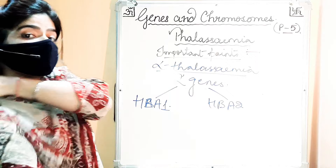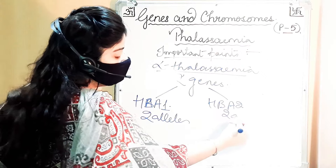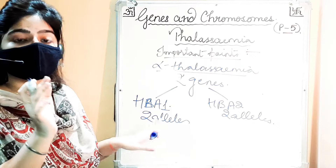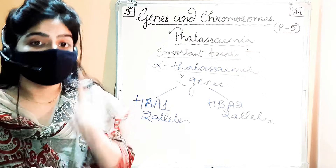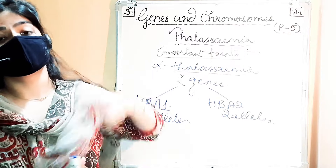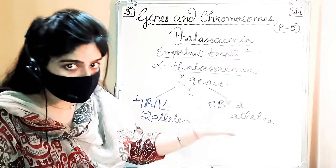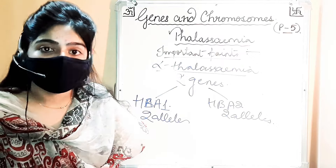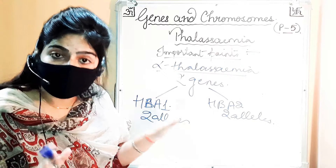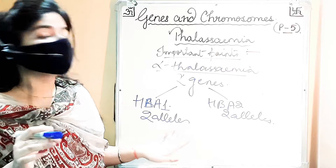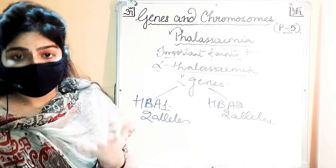With two genes giving four alleles total: if one allele is affected, that will be the silent carrier. If two alleles are affected, that will be the minor carrier. If three alleles are affected, that will also be minor carrier. If all four alleles are affected, this disease can cause death — in the fetus or even after birth.